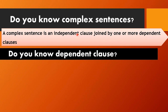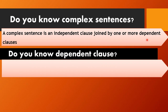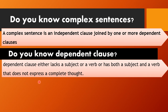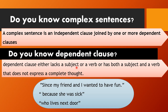We know what an independent clause is — but what about the dependent clause? The dependent clause is a clause that either lacks the subject or lacks the verb, or maybe it has both of them but they are preceded by one of the conjunctions that cannot be separated — like this example: 'since my friend and I wanted to have fun,' 'because she was sick,' 'who lives next door.'